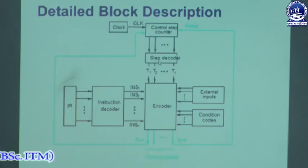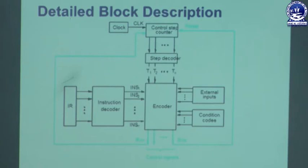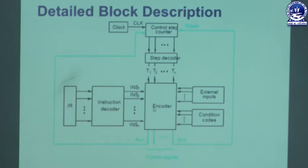The step decoder provides a separate signal line for each step or time slot. It provides the clock cycle — every step — because as seen in previous examples, one instruction may have multiple steps. According to the step, it assigns the time period or time slots. The instruction decoder provides output to the encoder, and the output of the instruction decoder consists of a separate line for each machine instruction. For any instruction loaded in the IR, one of these lines will be set to 1 and the other lines will be set to 0.